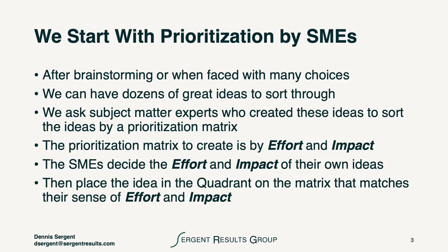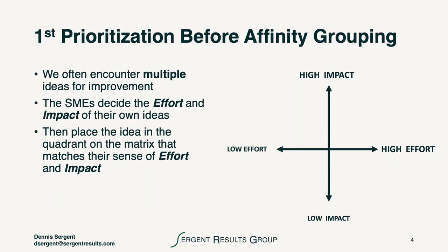We start prioritization with the SMEs — subject matter experts — who, after brainstorming, can be faced with many choices and dozens of great ideas to sort through. We ask those subject matter experts who created the ideas to sort them using a prioritization matrix that sorts their best ideas by effort and impact. We ask them to think about whether each idea is high effort or low effort, and high impact or low impact. We create a grid and ask them to take every single idea created in brainstorming and post it on this grid.